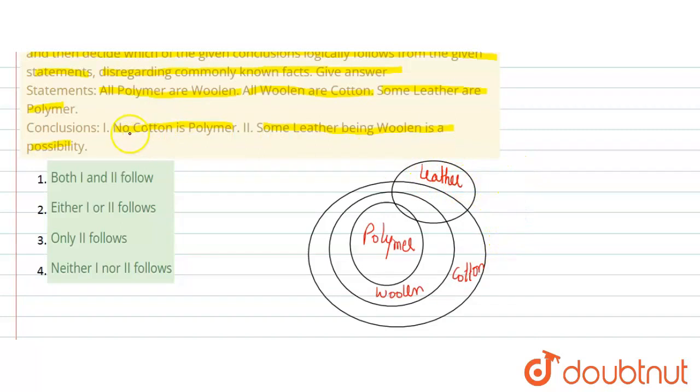No cotton is polymer. Koi bhi cotton mera polymer nahi hai, so yeh aapka definitely wrong ho gaya. Kyun? Yaha par dekhe sabhi polymer mera cotton ka part hai. That means definitely kuch cotton mera polymer hai. So yeh aap par aayega aapke paas conclusion one ke liye all polymer are cotton, therefore some cotton are definitely polymer. Aur yaha kaha raha hai koi bhi cotton polymer nahi hai, isliye wrong ho gaya.